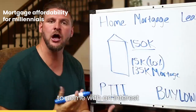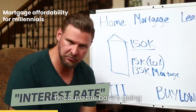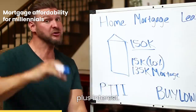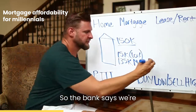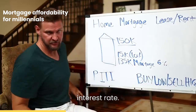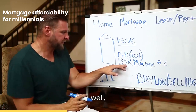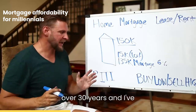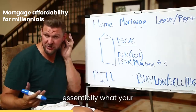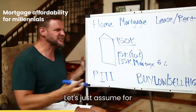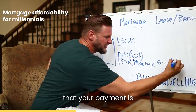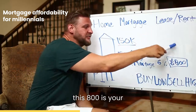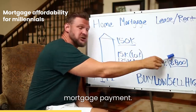Now that mortgage is going to come with an interest rate because the bank is going to say, 'We're not giving you our money for free. You've got to pay that back over time plus interest.' So the bank says we're going to do a six percent interest rate. If you're paying this back over thirty years with that interest rate, they'll do some math and tell you essentially what your payment is going to be. Let's just assume for this example that your payment is eight hundred dollars — that's just a guess. This eight hundred dollars is your mortgage payment.